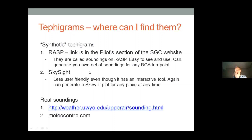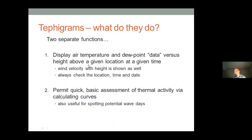It's clear that tephigrams do two separate things. One is quite simple: they display air temperature and dew point data versus height above a given location at a given time. They also show wind velocity with height as a convenience. The key thing about using any tephigram is that you should always check the location, date, and time.